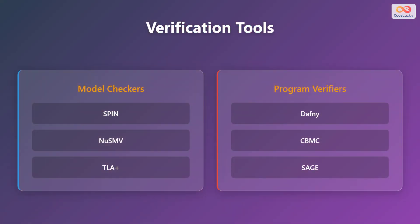Various tools are available for formal verification. Model checkers such as SPIN, NuSMV, and TLA Plus are used to verify system models. Program verifiers like Dafny, CBMC, and SAGE are used to verify the correctness of programs.